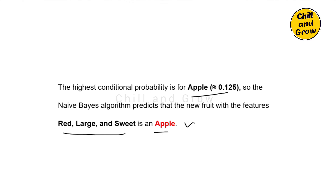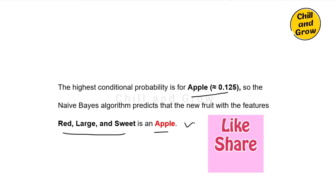Naive Bayes is used in spam email filtering, credit card risk assessment using loan pay history, and recommendation systems — such as suggesting another video or series to watch. Using the Bayes theorem formula, we substitute values, multiply probabilities, and select the class with the highest probability as the output. This is how Naive Bayes works. If you like the video, share with your friends — see you in the next video.